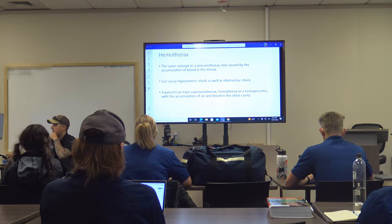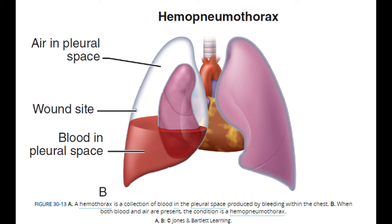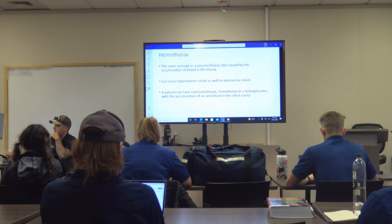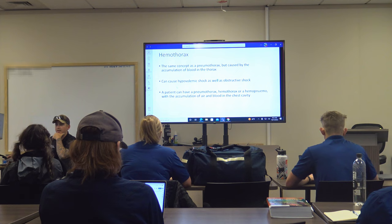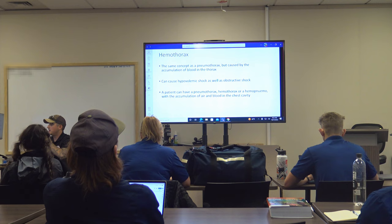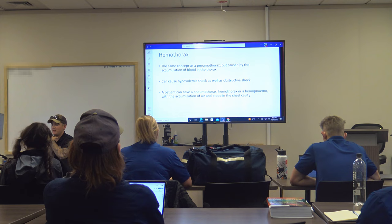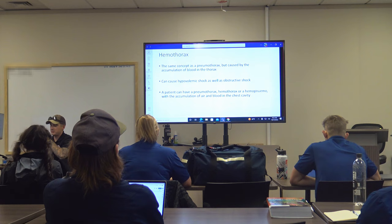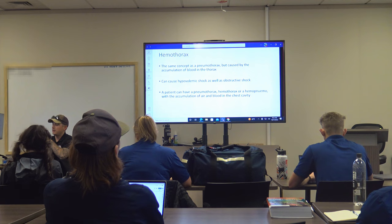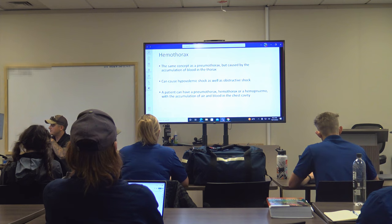A patient can have both a hemothorax and a pneumothorax simultaneously — called a hemopneumothorax — which is an accumulation of both air and blood in the chest cavity. That's a really bad day. They can also have bilateral involvement — double hemopneumothorax. If both lungs are affected, the trachea may go to the more affected side first and then end up in the center. In all reality, those patients are probably going to be in traumatic cardiac arrest before you arrive.